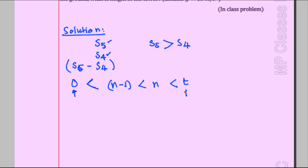To be mathematically precise, every term on the right-hand side must be greater than zero. You could write zero less than or equal to n, since you might be finding the distance in the very first second. Similarly, n must be less than or equal to t, where t is the time when the stone strikes the ground. The equality signs matter less; what matters is that n is within this interval.